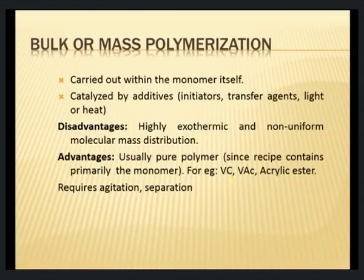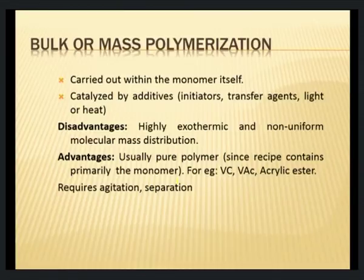Such bulk polymerization is used for a number of monomers including vinyl chloride to form polyvinyl chloride, vinyl acetate to form polyvinyl acetate, and is also suitable for acrylic esters. The reaction requires agitation, and the solid mass of polymer formed must be easily removed from the vessel, otherwise it will block and remain there. These are the requirements of bulk or mass polymerization.